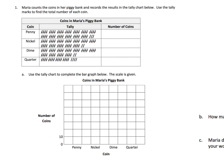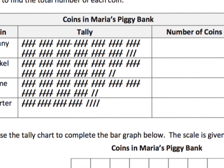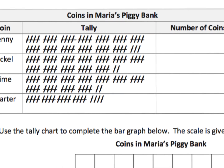Here Maria counts the coins in her piggy bank and records the results in the tally chart below. Use the tally marks to find the total number of each coin. Remember, the idea is we want students to be able to count by fives, because we definitely don't want them counting all those individual tally marks. So for this first category of coin — the penny.